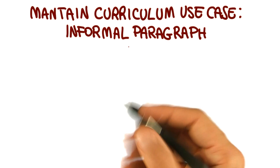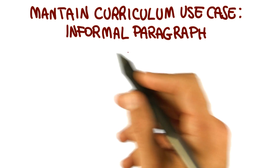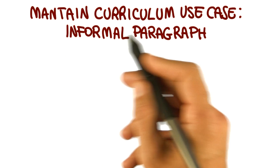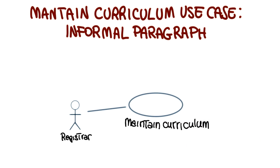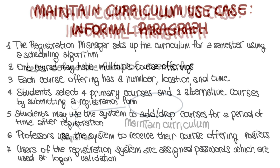As we did for the previous cases, now let's look at an example. Let's consider a specific use case: maintain curriculum, in which we have the registrar that interacts with the system to do operations for maintaining the curriculum. Let's define the flow of events for this use case. To do this, we're going to go back as usual to the description of our system.